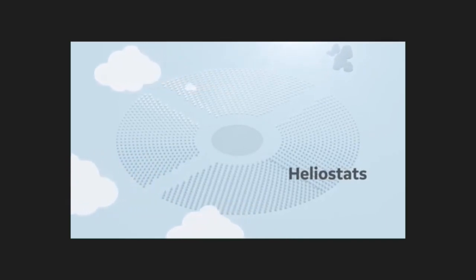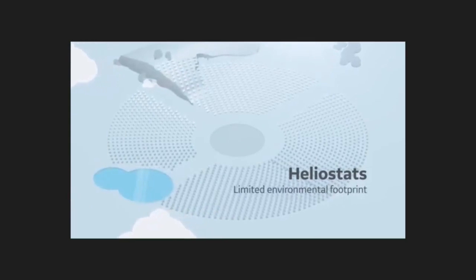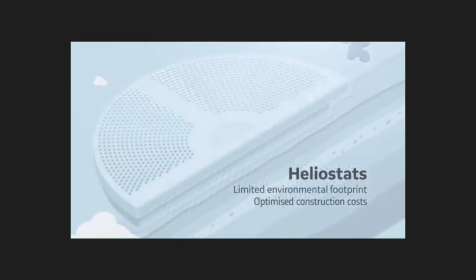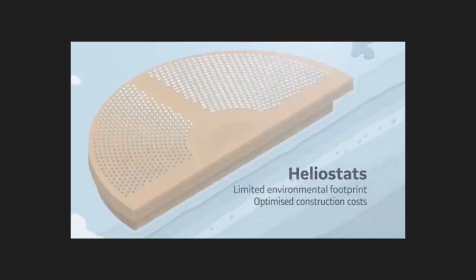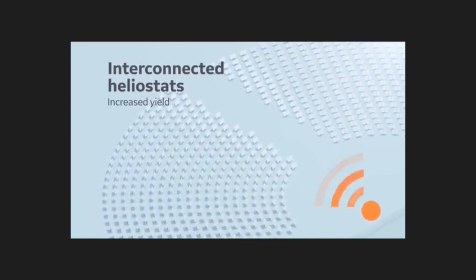Heliostats can be positioned individually, take up little space on the ground, and adapt to the shape of the terrain without requiring heavy foundation work. The farms can include from several hundred to several thousand heliostats which communicate with each other over Wi-Fi to optimize their yield.